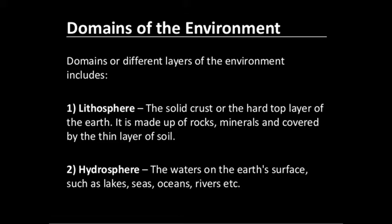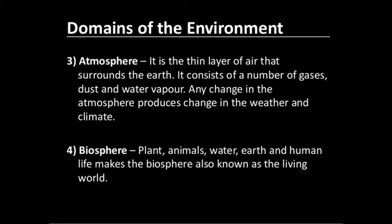Lithosphere: from the land, the solid crust — the hard top layer of the earth — is made up of rocks and minerals and covered by a thin layer of soil. Next is the hydrosphere. The water on the earth's surface, such as seas, oceans and rivers, are all domains of water present on the earth. It is known as the hydrosphere. Atmosphere: it is the thin layer of air that surrounds the earth, and it consists of a number of gases, dust and water vapor.